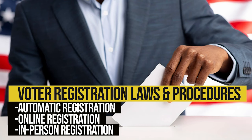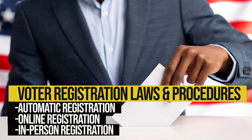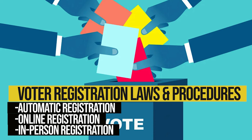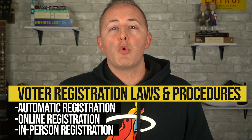Some states make it easier, for example, automatically registering citizens to vote. Other states require people to register themselves, but this can be made more convenient by allowing them to do it online, or it can be more difficult, for example, by requiring people to register in person. States also get to make their own procedures on how, when, and where to vote.